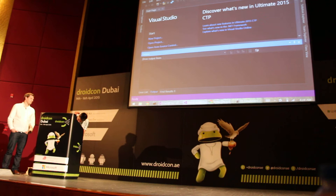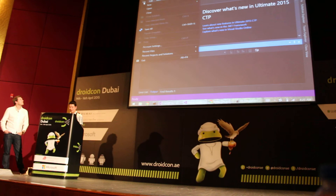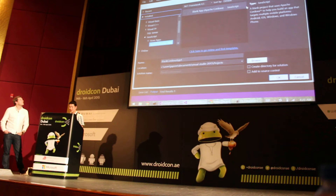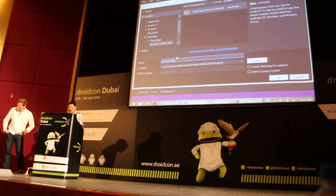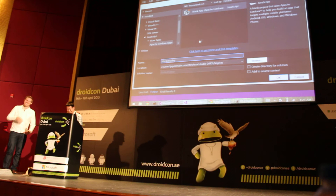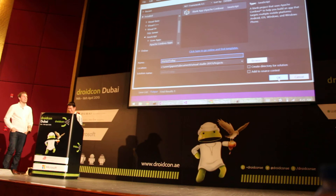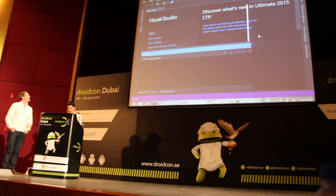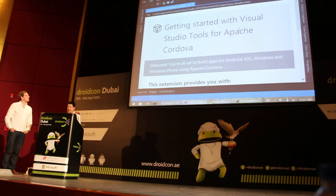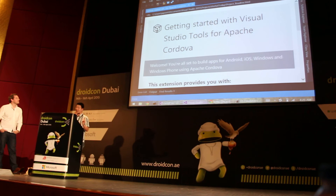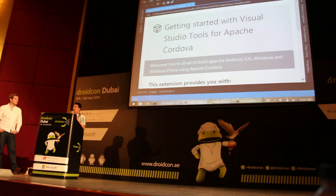This is Visual Studio 2015 CTP. We're going to create a new Cordova project. Once you install the Cordova tools on 2013, you get a new template called Apache Cordova Apps. Apache Cordova actually supports way more than three platforms — Android, iOS, Windows, Windows Phone, and others like Blackberry, Palm OS, Fire OS. But for Visual Studio, we've bucketed just the top three: Android, iOS, and Windows/Windows Phone.